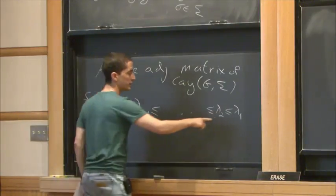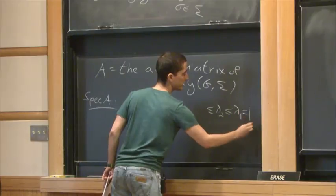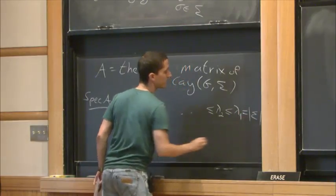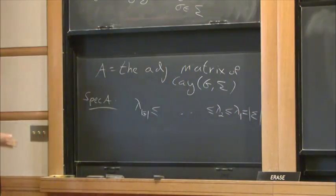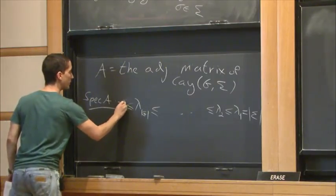And the largest eigenvalue is always trivial, it is the same, it equals the size of sigma, the size of the set of generators. And this one is at most minus sigma.